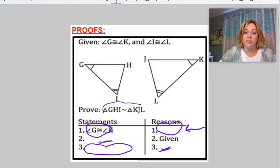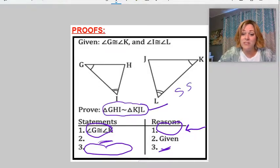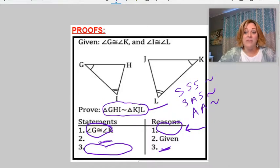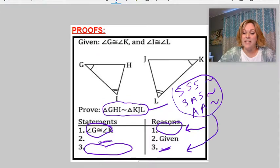And remember, if you're trying to prove that two triangles are similar, there's only three rules you can use. Side, side, side, side, angle, side, and angle, angle, similarity. So if you're trying to prove triangles are similar, you only have these three choices, which means they would have to go right here.